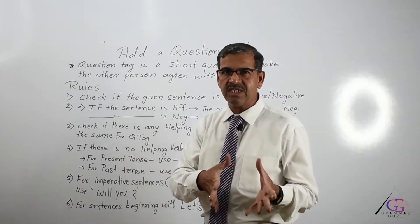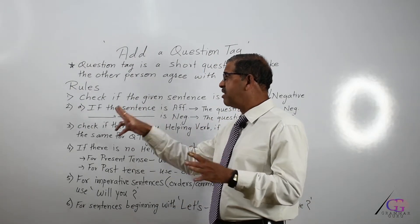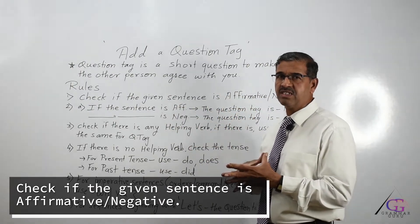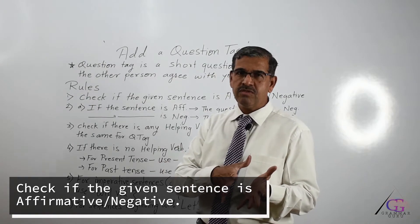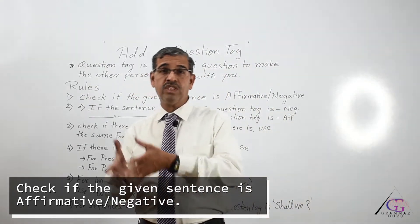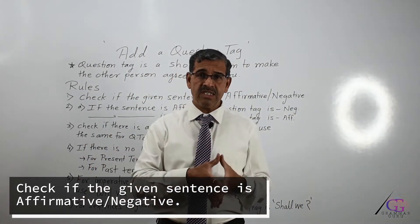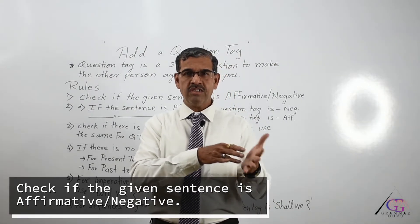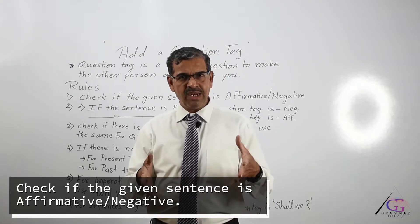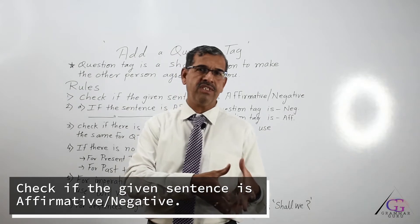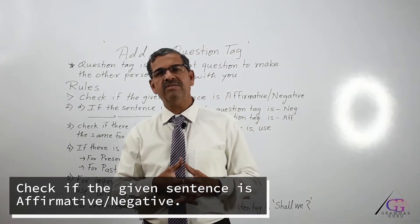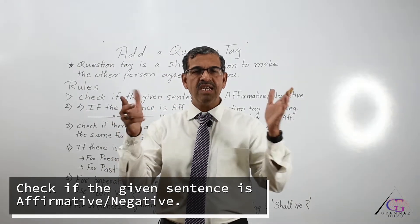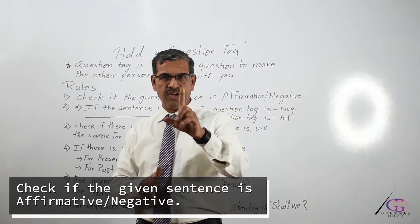Rule 1: The first thing we must do is check whether the given sentence is affirmative or negative. Sentences having words like 'no,' 'not,' 'never,' 'neither,' or 'nor' are normally negative. All other sentences that do not have these words are affirmative. So the first step is always to check: is the sentence in front of us affirmative or negative?